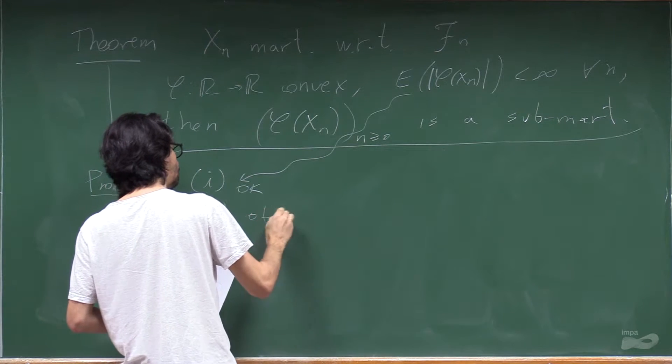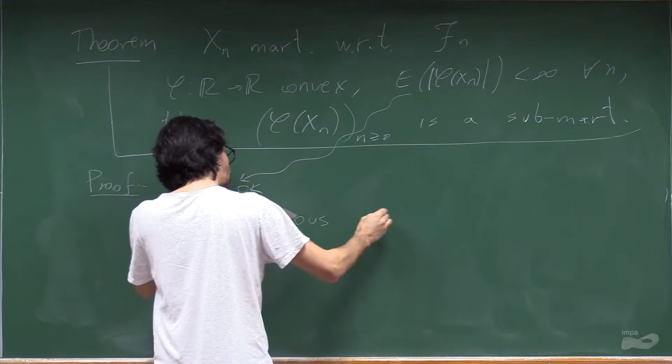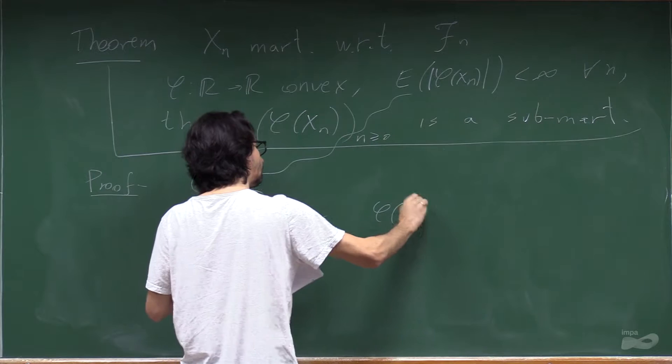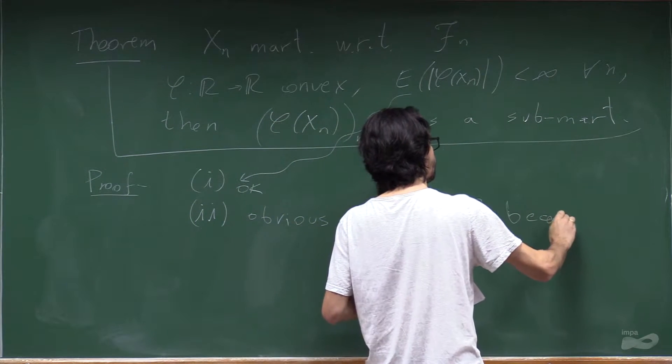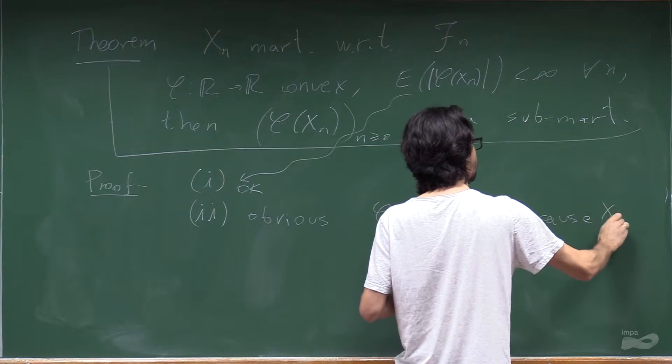2 is obvious. Phi of xn is in fn because it's a function of xn.